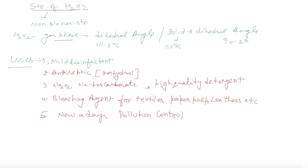Uses - it is used as a mild disinfectant and antiseptic. In the market, it is sold by the name of perhydrol and hydrogen water. It is used in the formation of sodium perborate and sodium percarbonate, which are used in high quality detergents. It works as a bleaching agent for textile, paper pulp, leathers, etc.